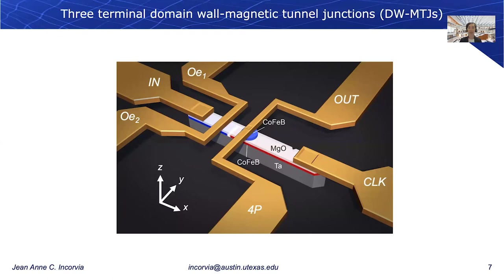The device I'm focusing on is called the three-terminal domain wall magnetic tunnel junction, or domain wall MTJ. There is a patterned wire made out of heavy metal, then a ferromagnet, and then magnesium oxide on top. In the ferromagnet — the cobalt iron boron — there is a domain wall, which we can move back and forth across this wire by applying a current between the input and the clock terminal. We can then read out the resistance state of the device through a tunnel junction shown by this patterned blue disk.